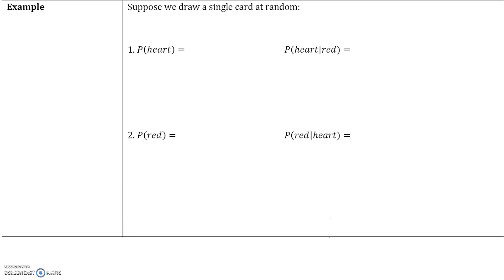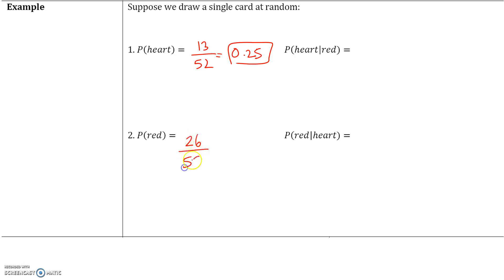Here's another example. Suppose we draw a single card at random. What is the probability that the card is a heart? There are 13 hearts in a deck and 52 cards total, so 13 divided by 52 is one-fourth, or 0.25. What is the probability that the card is red? There are 26 red and 26 black cards, so 26 out of 52, which gives us 0.50.